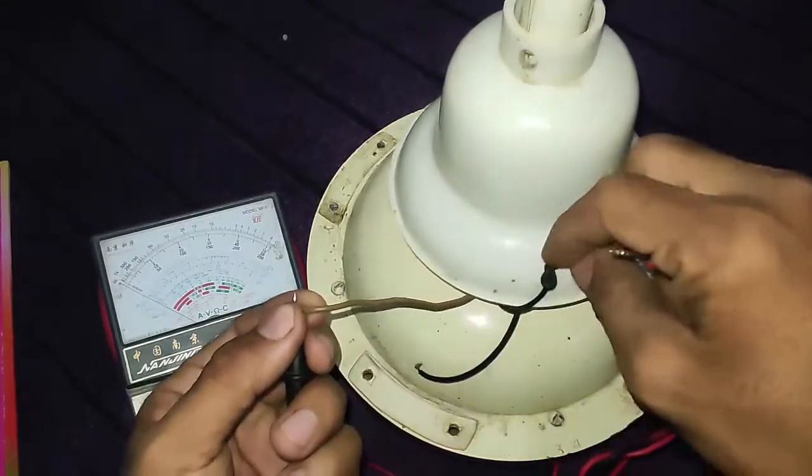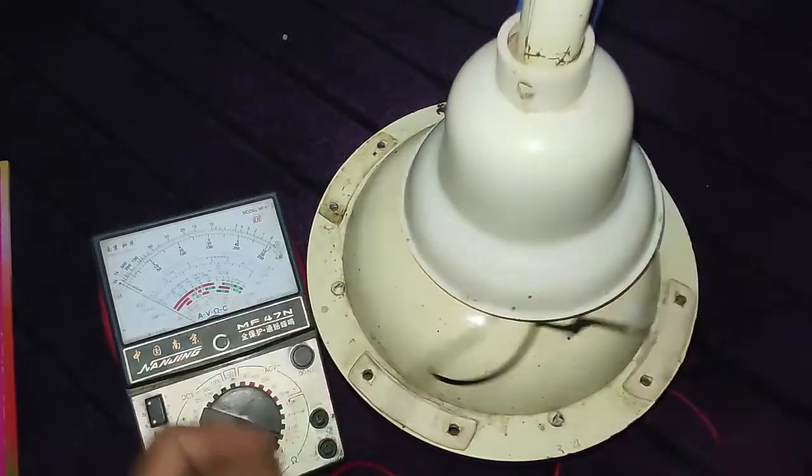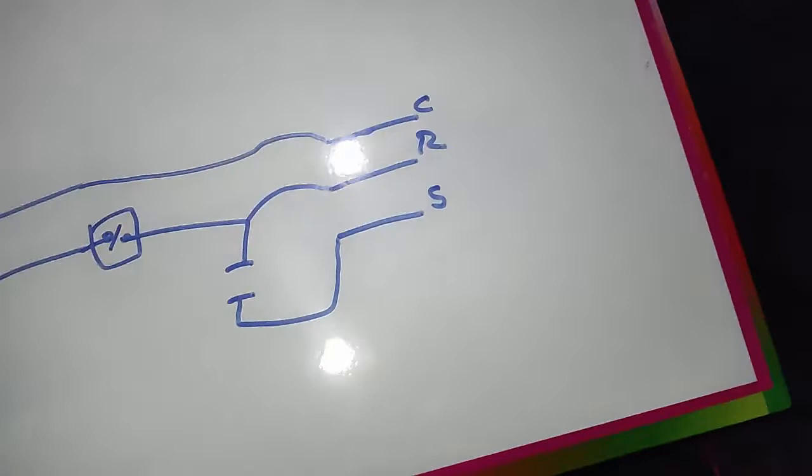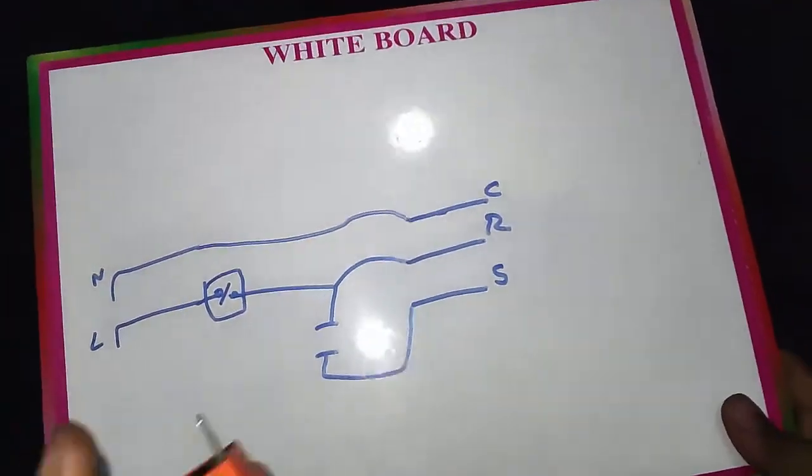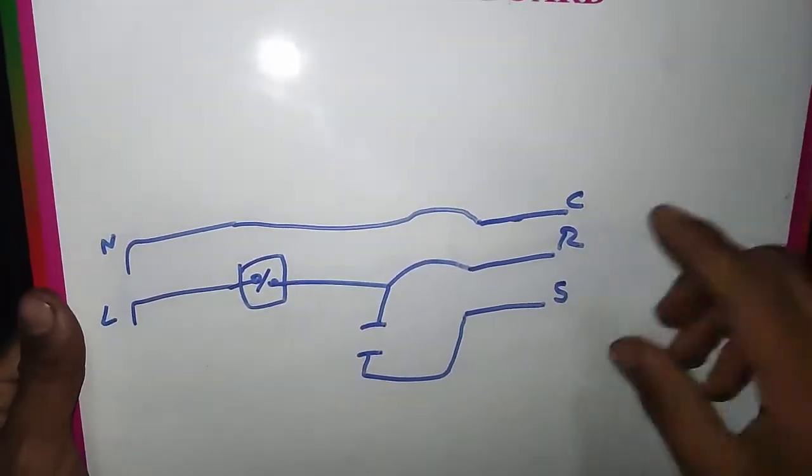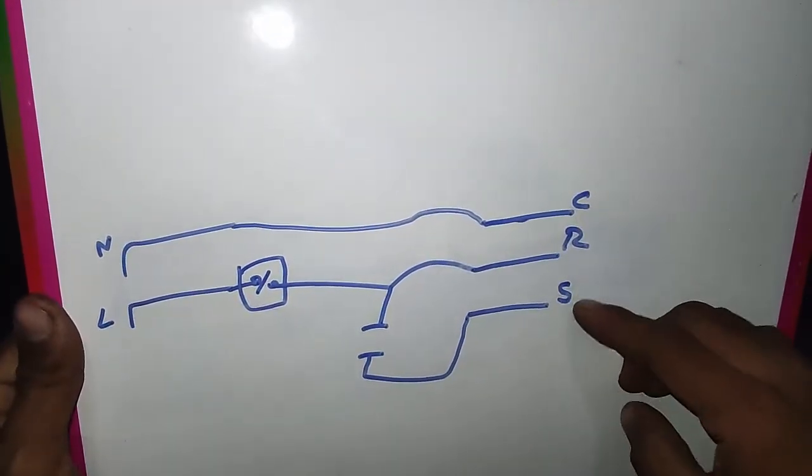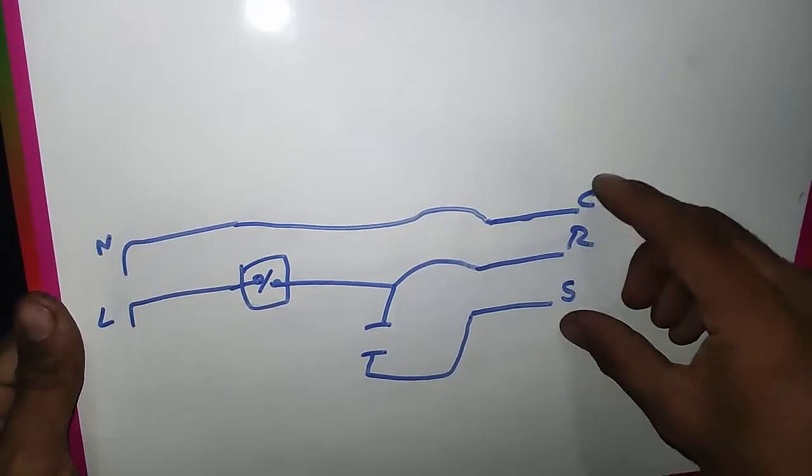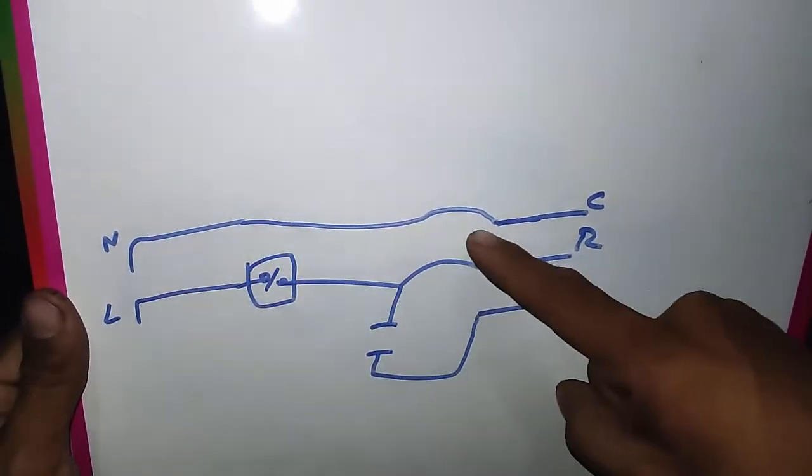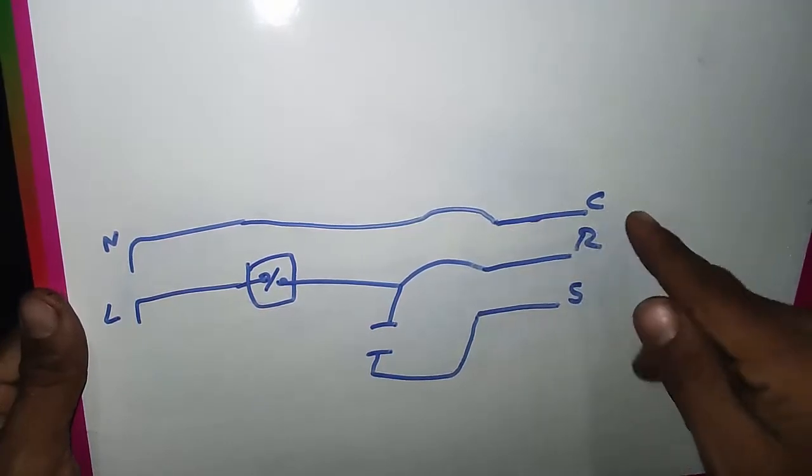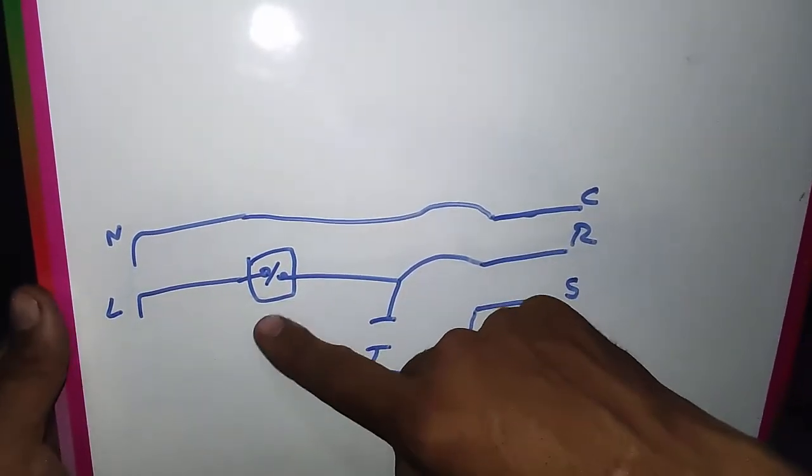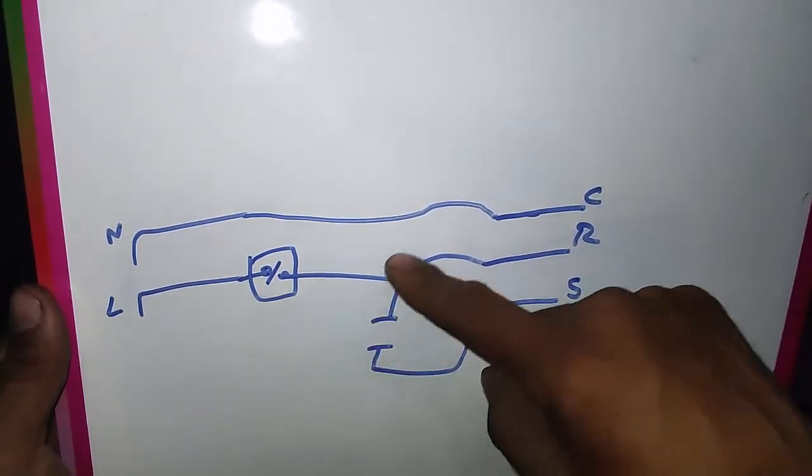Here I show the connection with the capacitor. The 3.5 microfarad capacitor is used with this ceiling fan. I show common, running, and starting terminals as the connection points. The neutral supply goes directly to common, the line supply goes to the one-way switch, and from this switch it goes to the running.